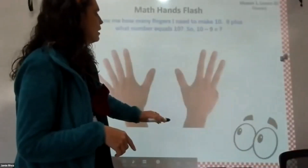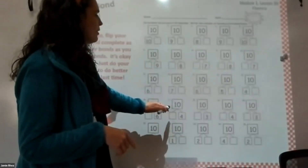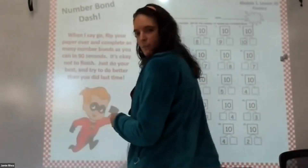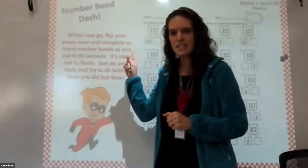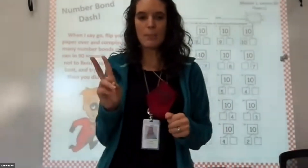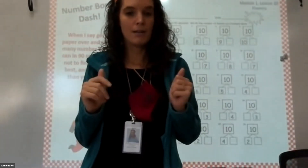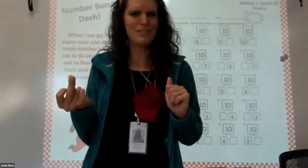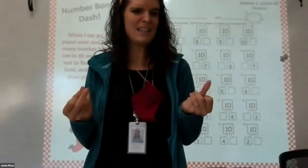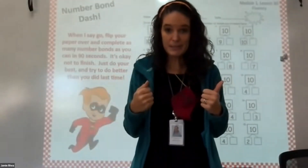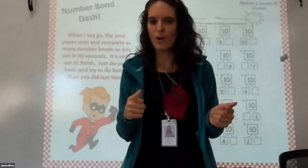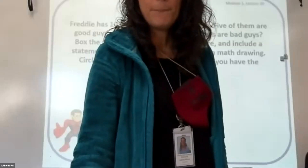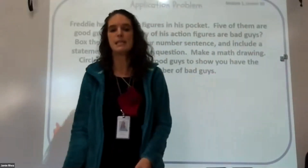Go to Google Classroom and find my friend — the number bond dash to 10 activity. Set your timer for two minutes. If you're feeling really confident, set it for one minute and thirty seconds to see how fast you can go, because we should be able to do these really fast. Pause the video, go do your fluency, then come back so we can do our application problem.